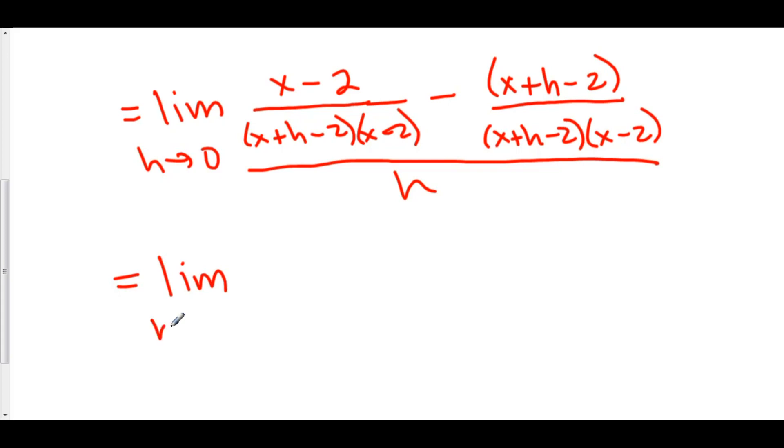So here we have the limit as h approaches 0. We have x minus x. That cancels out. We have negative 2 minus negative 2. That's negative 2 plus 2. That cancels out. We've got the negative h on top over x plus h minus 2 times x minus 2 over h.